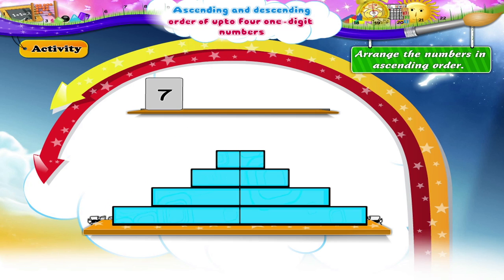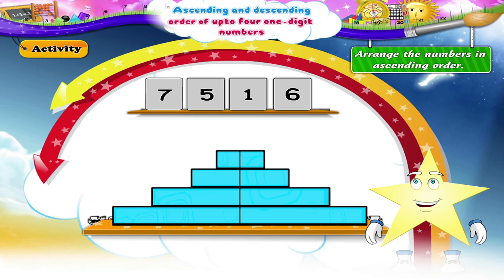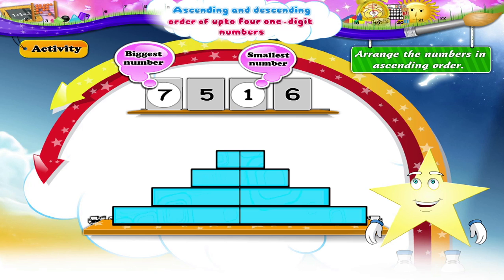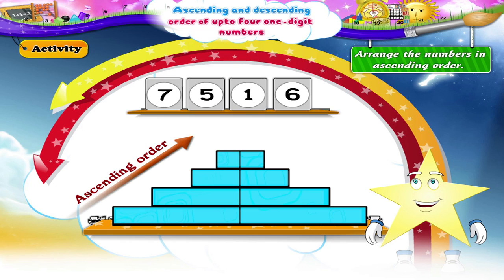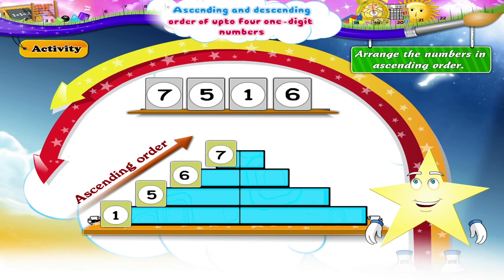Eight, seven, five, one, six. In this set, Starry, the smallest number is one. The biggest number is seven. And between five and six, five is the smaller number. The numbers in ascending order are one, five, six, seven.